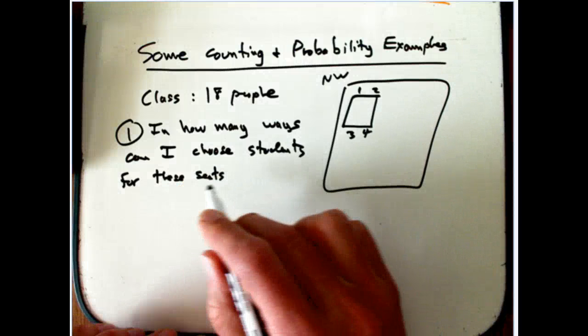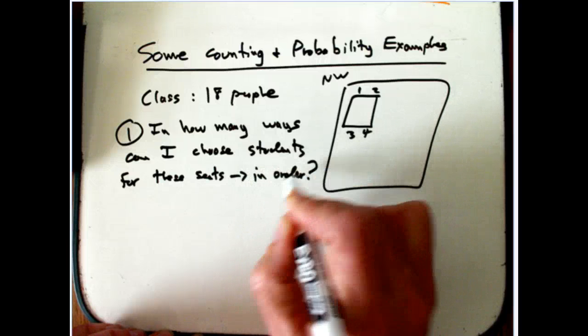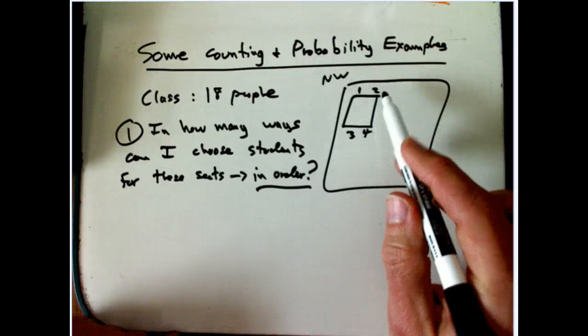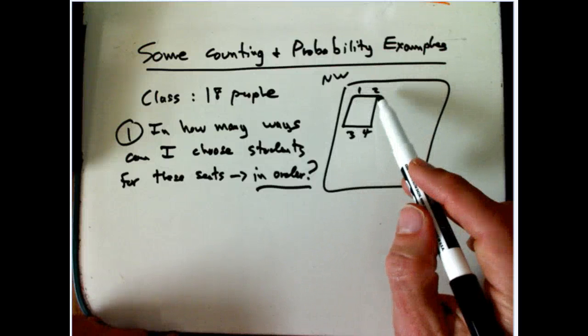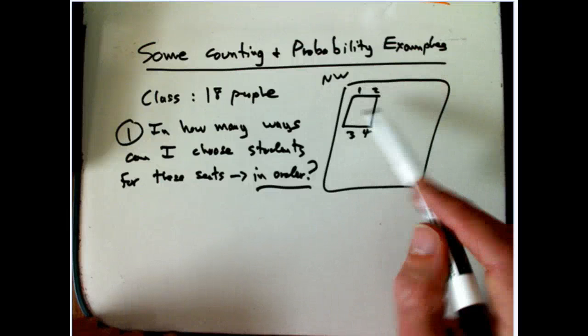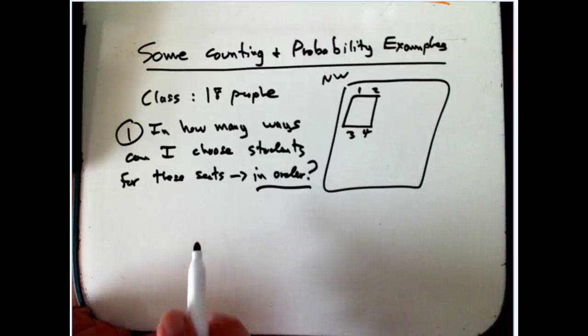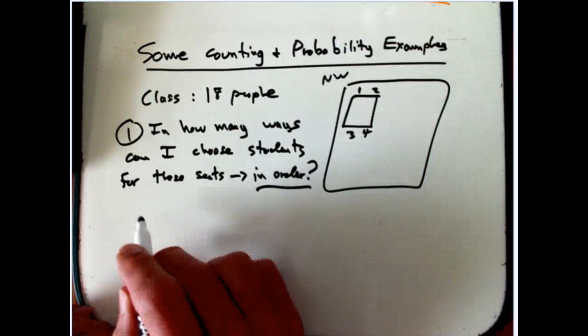And I'm saying these seats at this table to indicate that I really want to get them in order. So I really am assigning a particular student to 1, a particular student to 2, a particular student to 3, a particular student to 4, and I care about what order they're in. Which I don't usually actually care about when I'm assigning students to tables, but we'll get to that next. So this is the fundamental counting principle.